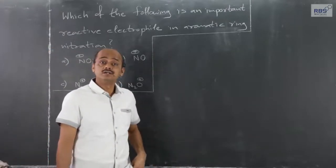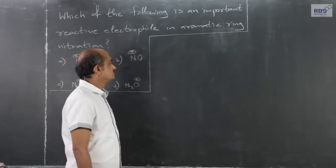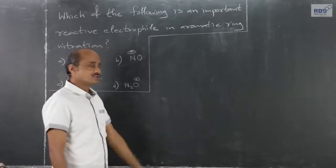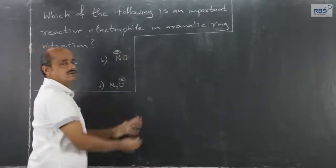nitration of toluene, nitration of aniline - it can be any aromatic ring. Which species among the four is the actual electrophile which attacks?